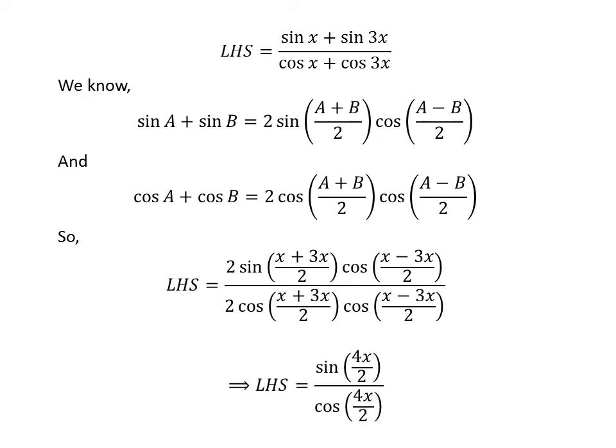Cancelling out the common factor 2 and cosine of (x minus 3x) upon 2 in the numerator and denominator gives us: left-hand side equals sine of 4x upon 2, divided by cosine of 4x upon 2.